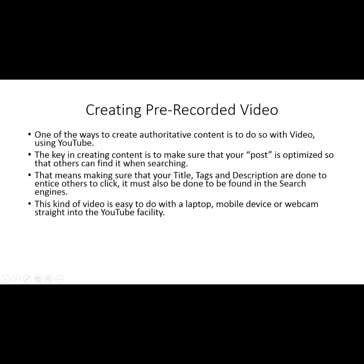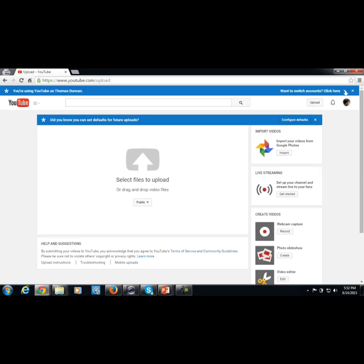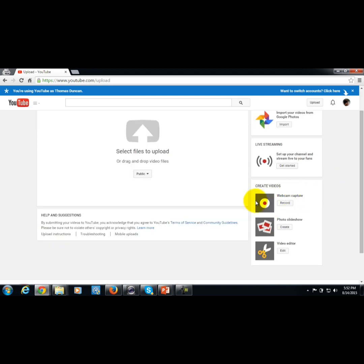This kind of pre-recorded video is very easy to do. If you have a laptop, mobile device, or webcam that allows you to record video, you can actually record straight into YouTube's facility — you don't really even need any software. You can go right inside YouTube and capture the information on your webcam.